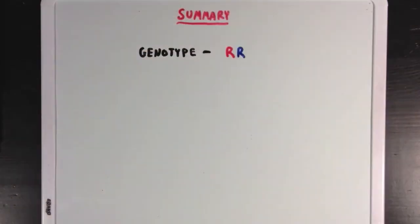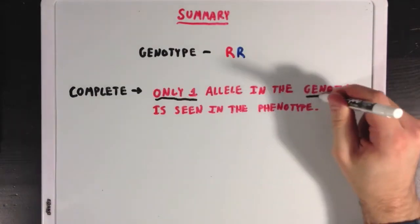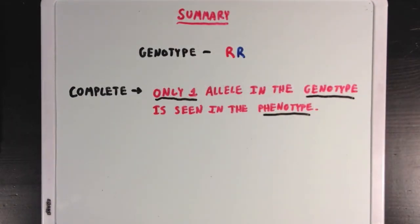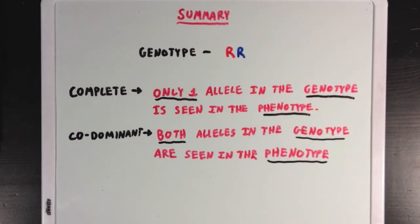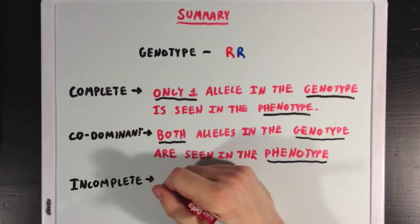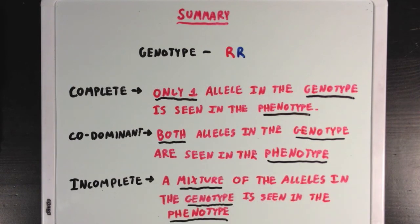So what did we learn? Assuming the heterozygous genotype red R, blue R, there are three different dominance patterns. In complete dominance, only one allele — the dominant allele — is seen in the phenotype; this was the red flower example. In codominance, both alleles in the genotype are seen in the phenotype; this was the flower with both red and blue petals. And in incomplete dominance, a mixture of the alleles is seen in the phenotype; this was the purple flower example.